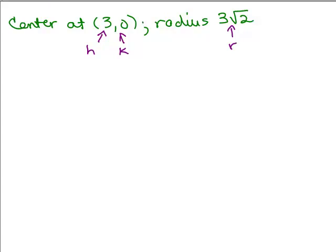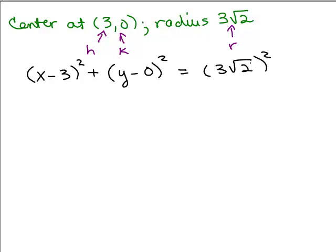So, we put that in the standard form which will be X minus H squared plus Y minus K squared, and of course you could skip writing the minus 0 if you realize that's just going to be Y squared, equals 3 square roots of 2 squared. So, 3 squared and square roots of 2 squared.